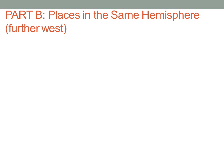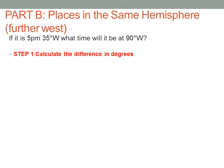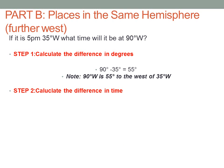Now we are going to calculate the time of places in the same hemisphere, those places that are further west. If it is 5 p.m. at 35 degrees west, what time will it be at 90 degrees west? We need to calculate the difference in degrees: 90 minus 35 degrees equals 55 degrees. So 90 degrees west is 55 degrees to the west of 35 degrees west. Step 2, we are going to calculate the difference in time: 55 degrees divided by 15 degrees gives us 3 hours with 10 degrees remaining. We need to multiply the 10 degrees by 4, which gives us 40 minutes.